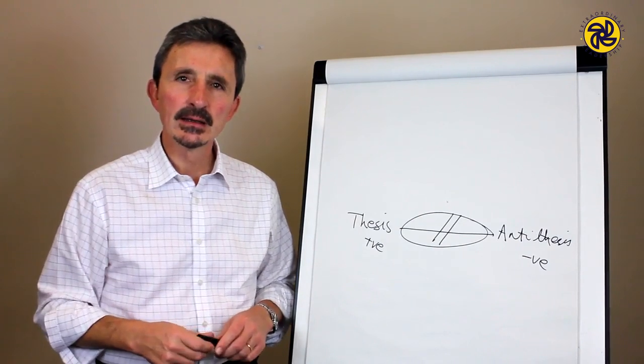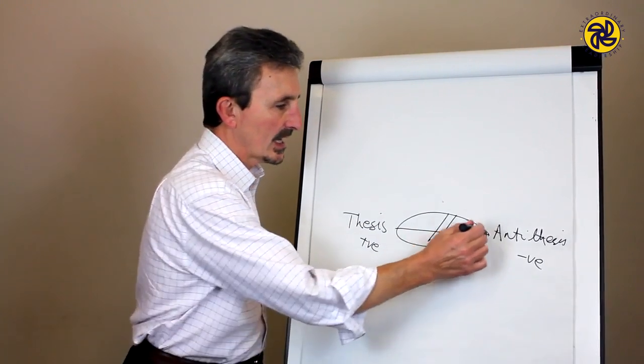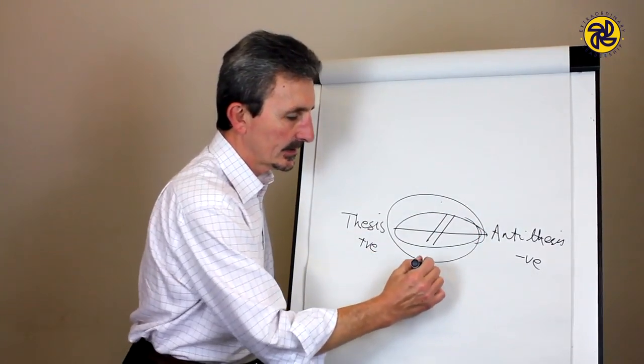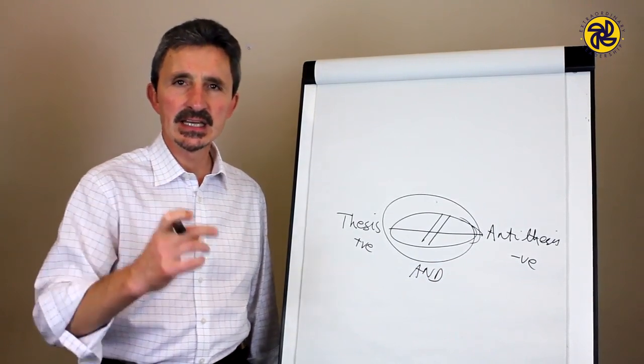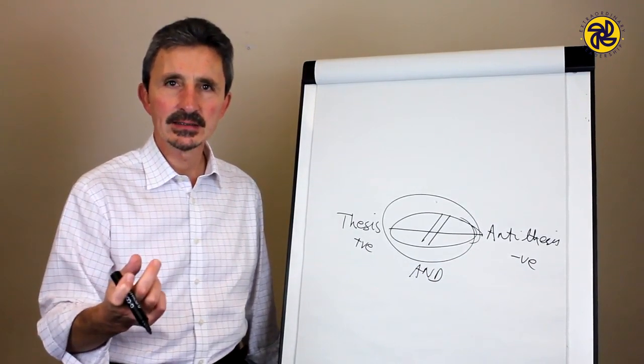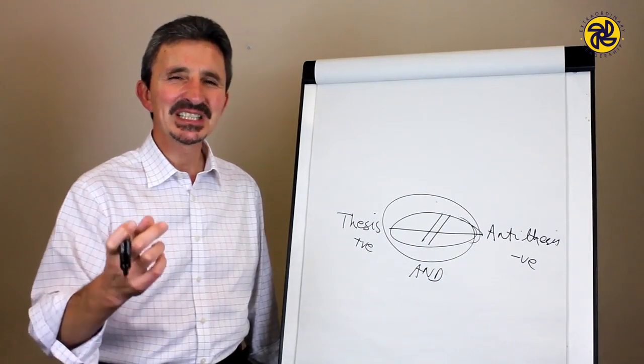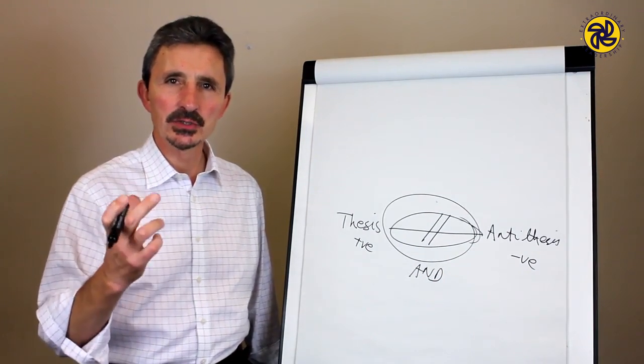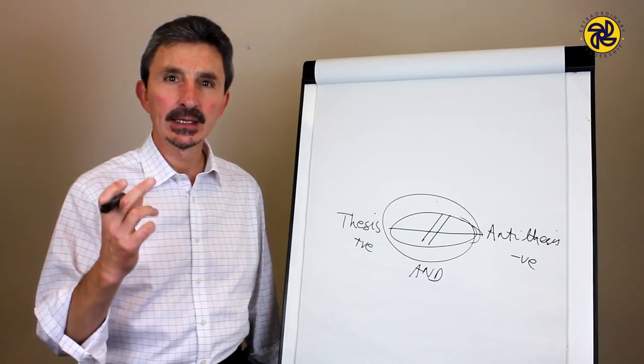So, we say, that it is never either or, it is always and. And when we find ourselves thinking, it's this or that, then it's useful to remember, hmm, what is the and in the middle that joins these two together? And we're going to take a look at that in a moment.